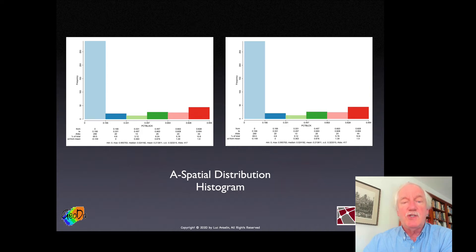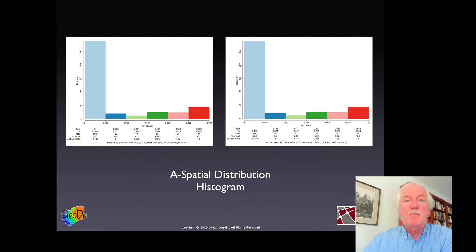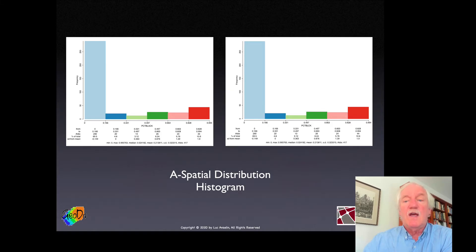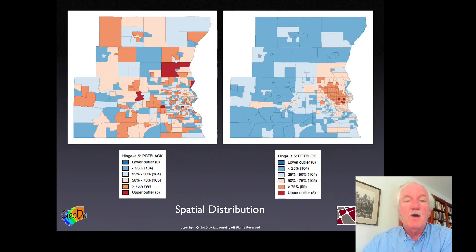The histogram is an aspatial analysis technique — it doesn't tell you anything about what is where or about the physical spatial segregation pattern in the city. It tells you there are lots of tracts with no African-Americans and lots with predominantly African-Americans, but not where this happens. In contrast, the map does. The map on the right is the true map, showing the African-American population concentrated in the center city. The map on the left is fake.